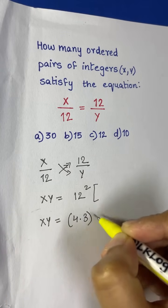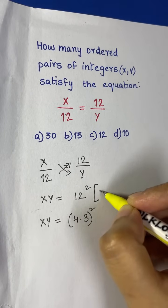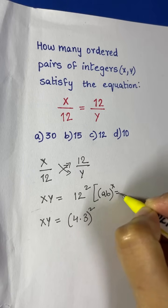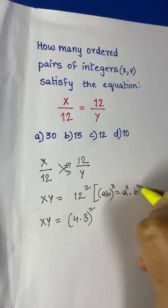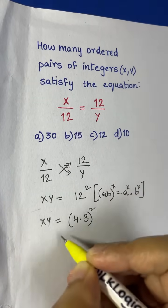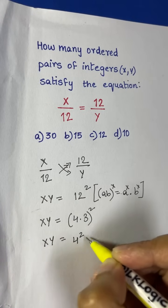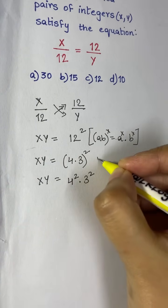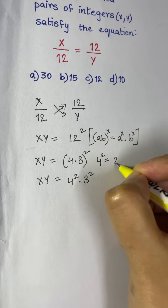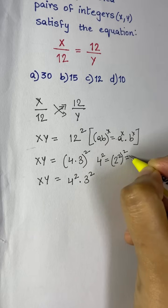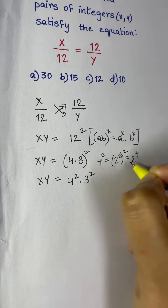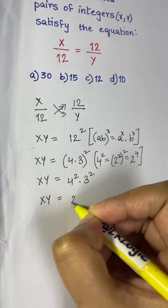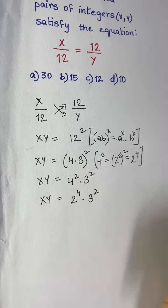Now xy = 12² can be broken down as (4 × 3)². Using the rule (ab)^x = a^x × b^x, we split it: xy = 4² × 3². And since 4 = 2², we get 4² = 2⁴. So xy = 2⁴ × 3².